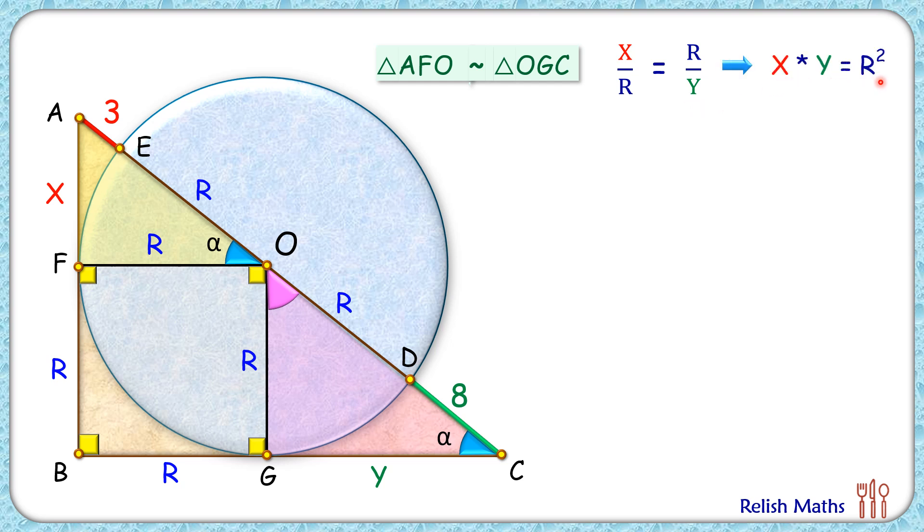Squaring both sides, we'll get x squared times y squared is R raised to power 4. Why we have squared it will be clear in a few minutes. Now let's apply the tangent-secant theorem.